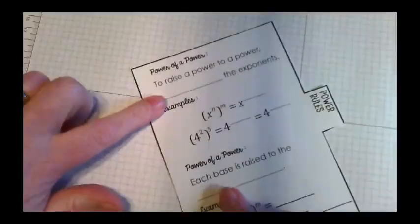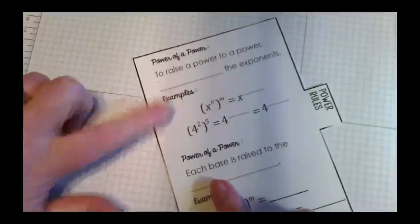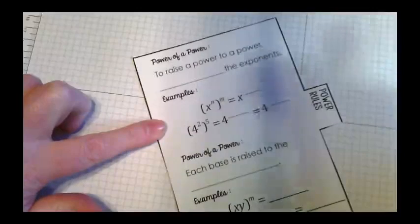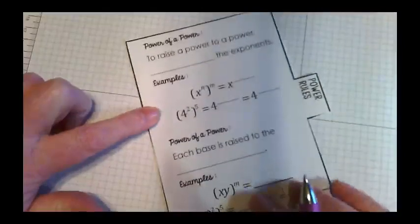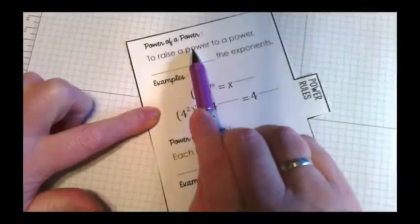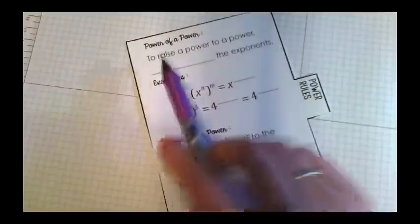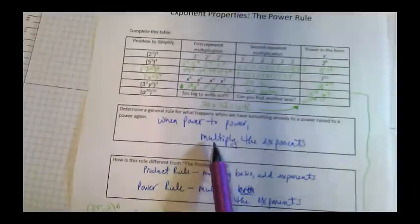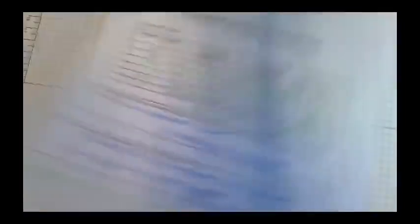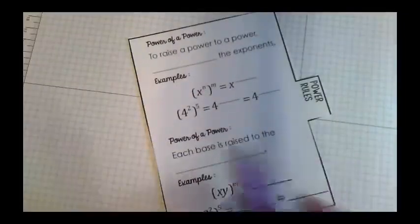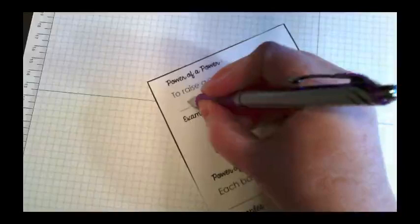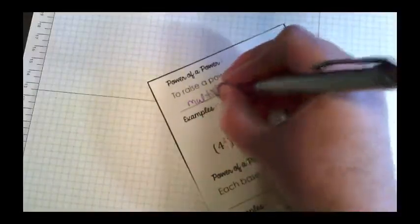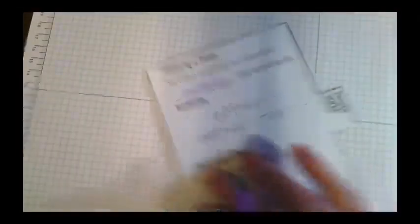So we're starting with the power rules. There's actually two rules on this sheet from our proof sheet. We're taking two pieces of paper and bringing them down to a single mini book sized sheet. Power to power. So that was what we called here the power rule. Remember what we did? We multiplied the exponents in this one. So to raise a power to a power, multiply the exponents.